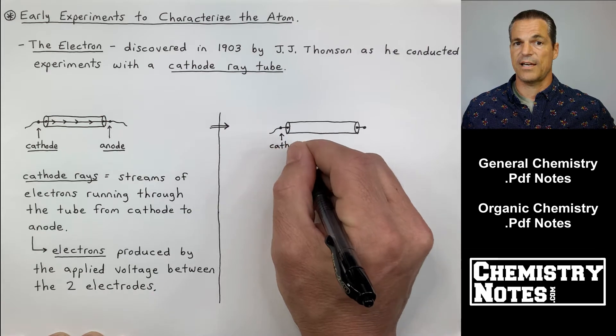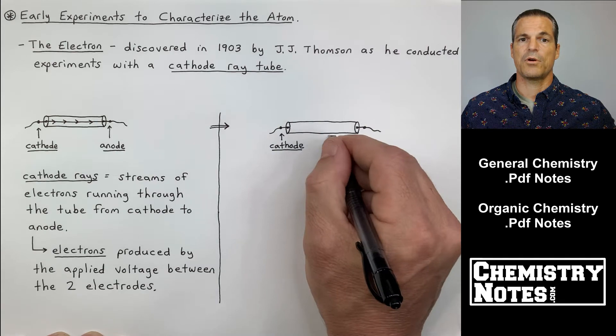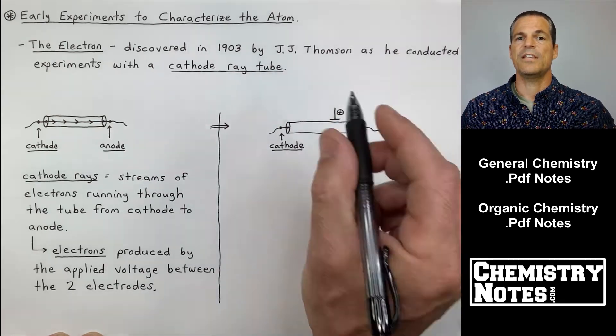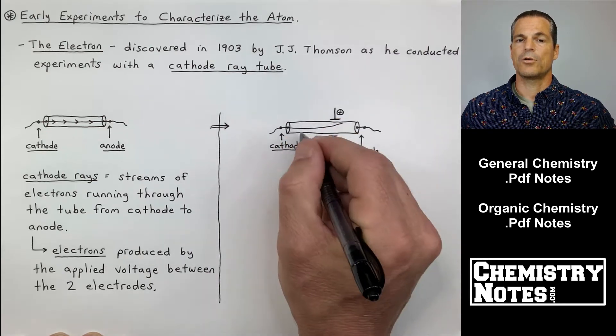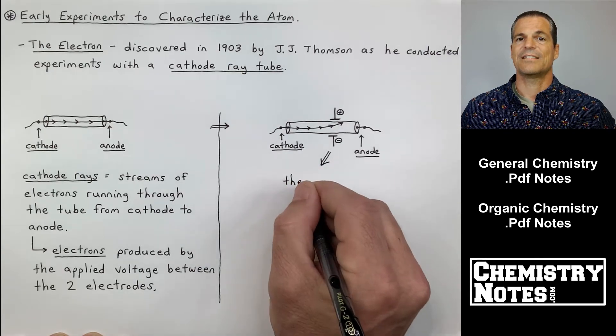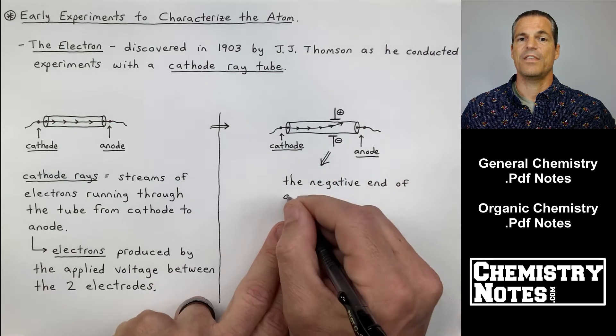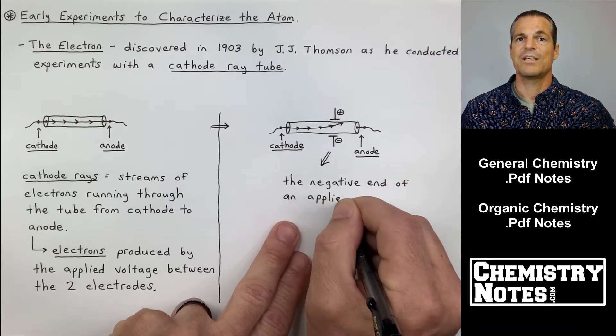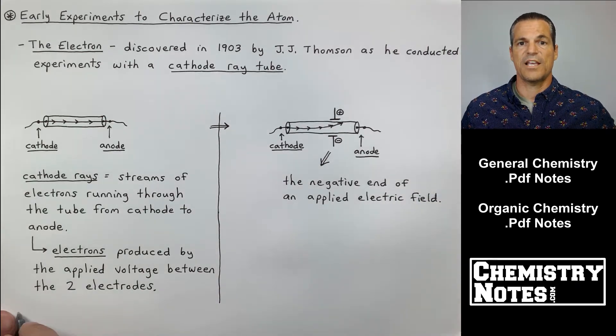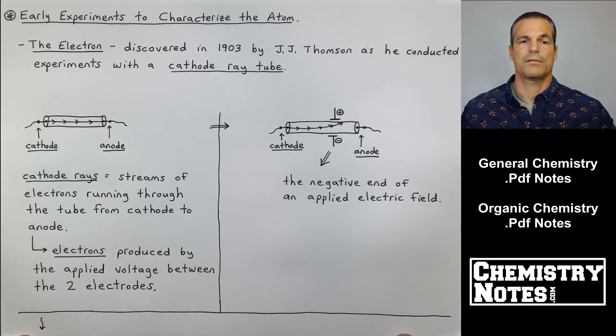On the right-hand side I'm redrawing my cathode ray tube. Cathode is the electrode on the left. Anode is my electrode on the right. You'll see that the electrons are being attracted to the positive end of this electric field. The negative end of the applied electric field is repelling electrons away from it. Or you could say that the positive end is attracting electrons towards it.